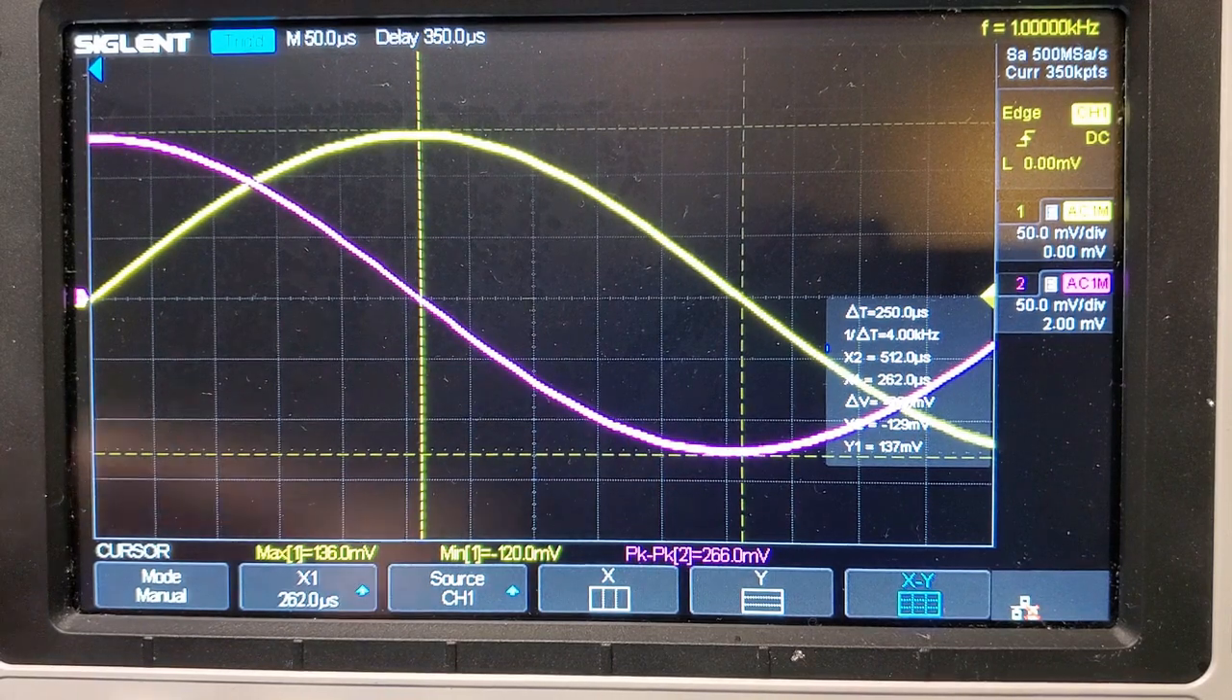Let me adjust to reduce the difference between those two. I'm actually going the wrong way, so let me go the other way. Let's switch back to X1, move that a little bit in, then switch back to X2 minus X1 and see what the difference is now. I'm at exactly 250 microseconds difference between the yellow trace and the purple trace.